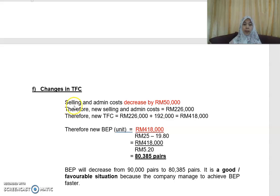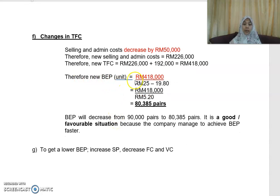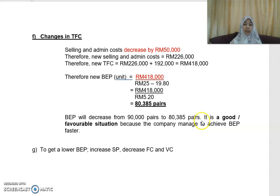Part (f) examines changes in total fixed cost. If selling and admin cost decreases by RM50,000, the new total fixed cost becomes RM418,000. Using the contribution technique with the new fixed cost, the new break-even point is 80,385 pairs.